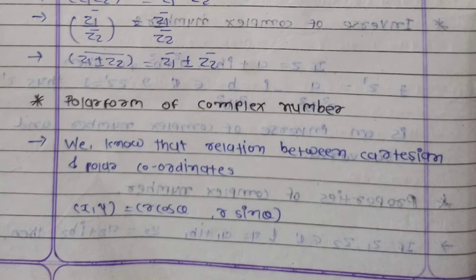Next, the polar form of a complex number. We know the relation between Cartesian and polar coordinates: x is equal to R cos theta and y is equal to R sin theta.